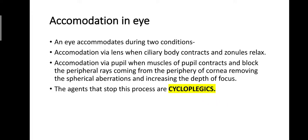Accommodation is the change in the dioptric power of the lens, and we accommodate during near work. The eye accommodates in two ways: accommodation via the lens, when the ciliary body contracts and the zonules relax, and accommodation via the pupil.